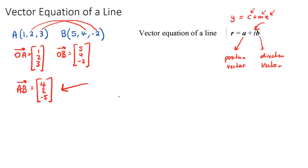So the vector equation of our line will be R equals, and we put our position vector that we're going to choose. I'm just going to choose the first one, 1, 2, 3. You could have chosen 5, 4, negative 2. That's fine.